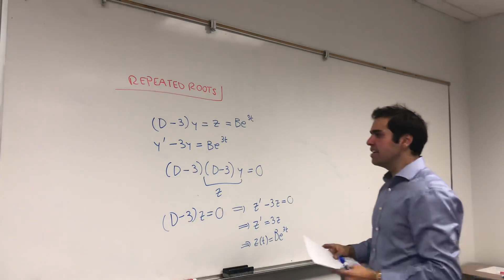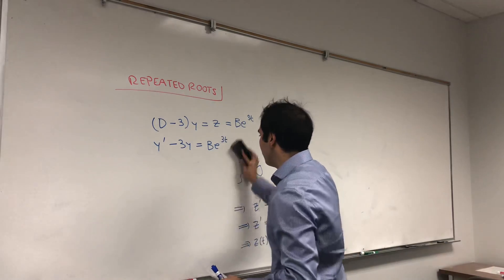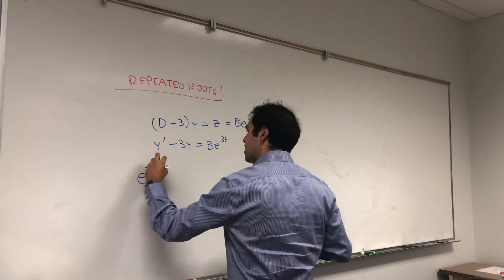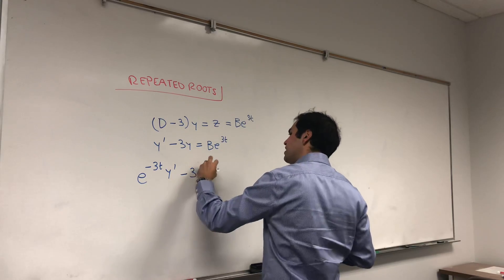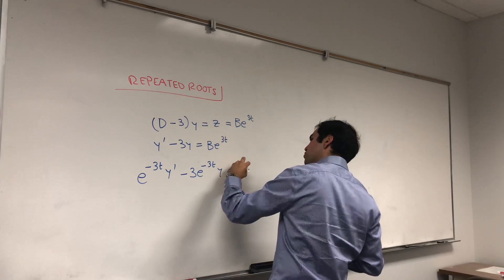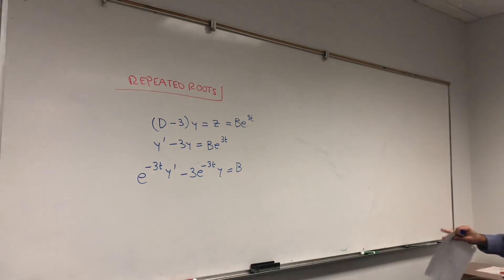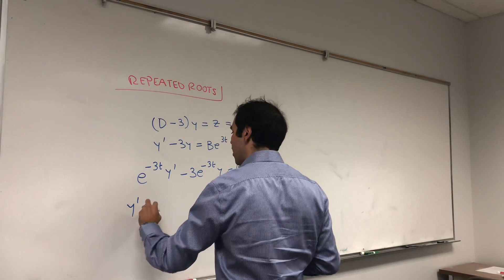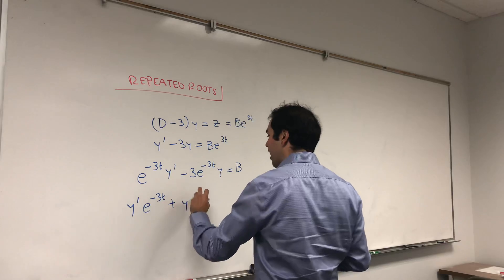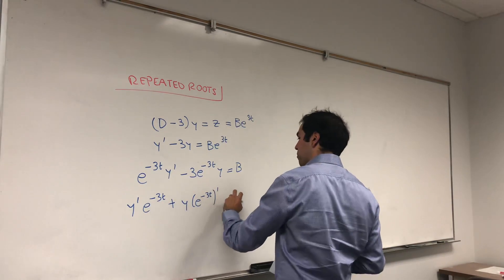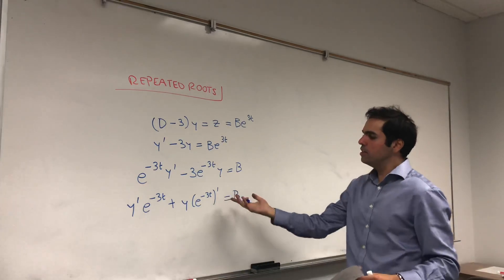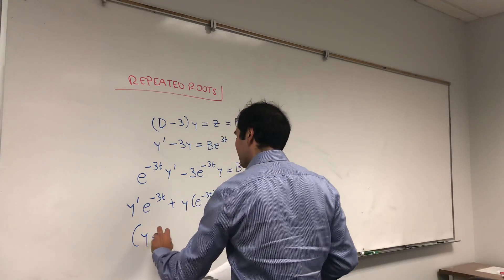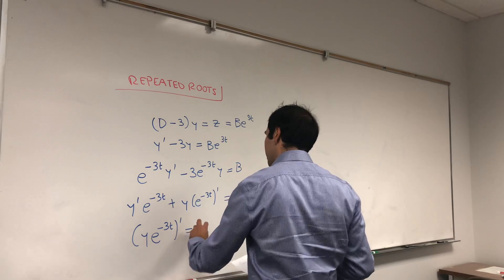Now, let's multiply this equation by integrating factor, which is just a fancy way of saying, let's multiply this by e to the minus 3t. So, we get e to the minus 3t times y prime minus 3e to the minus 3t times y equals b. And the reason we did this, notice this is a hidden product rule, because this is really y prime e to the minus 3t plus y times e to the minus 3t prime equals b. Because the derivative of e to the minus 3t is minus 3e to the minus 3t. So, by the product rule, we get y e to the minus 3t prime equals b.